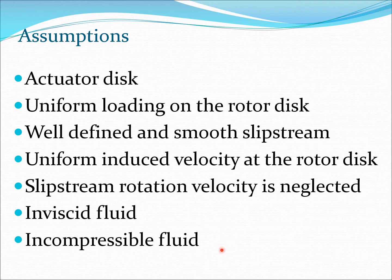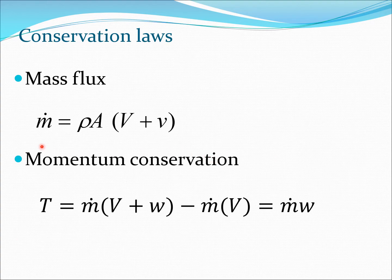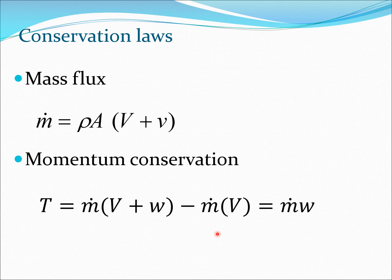The incompressible assumption is valid because the climb velocity of a typical rotor is very small. Now for the equations: the mass flux is ṁ = ρA(V + v), that is the mass going through the rotor disk. Momentum conservation gives T = ṁ(V + w) − ṁV, and since the V terms cancel out, we still get T = ṁw.